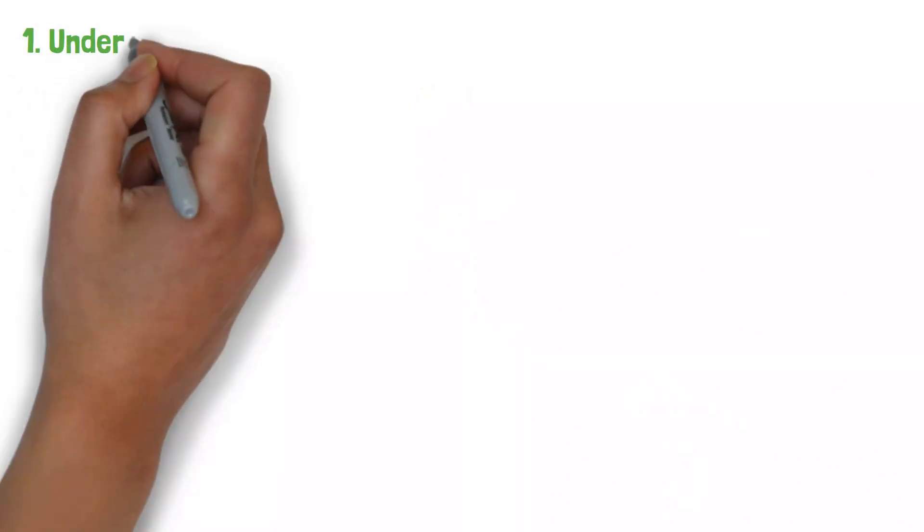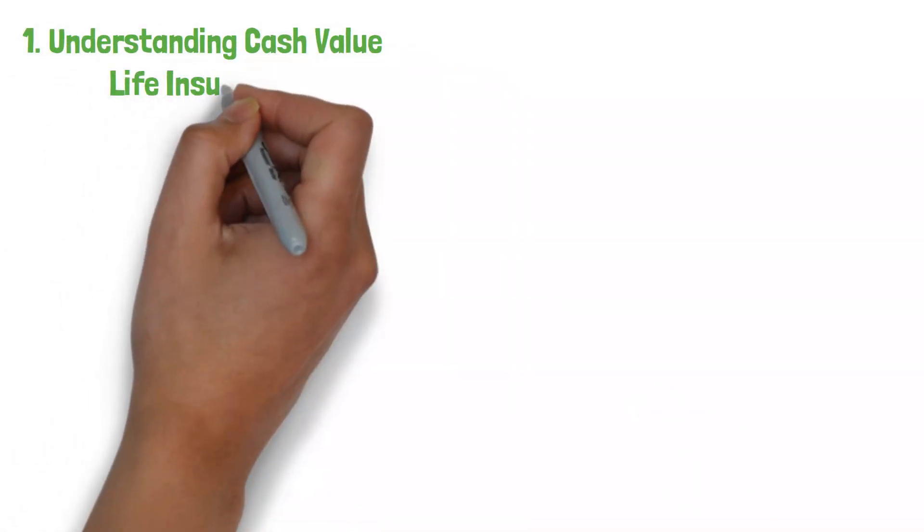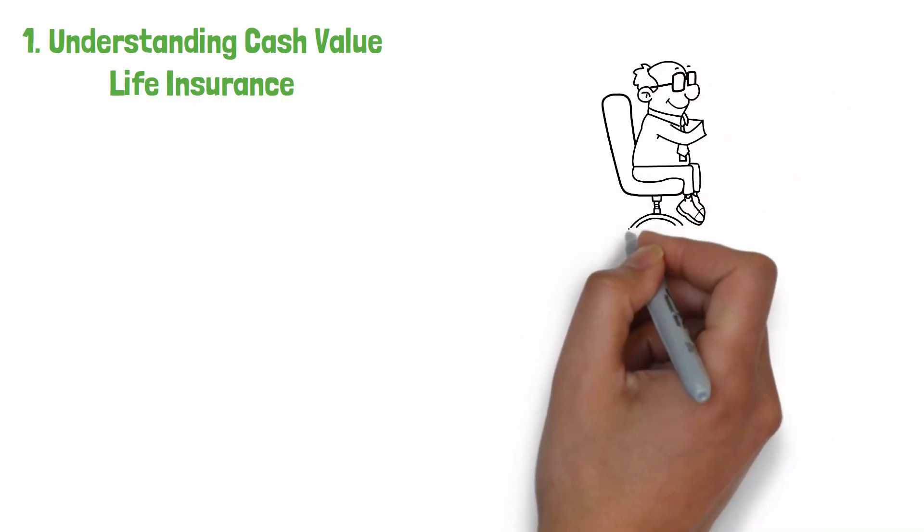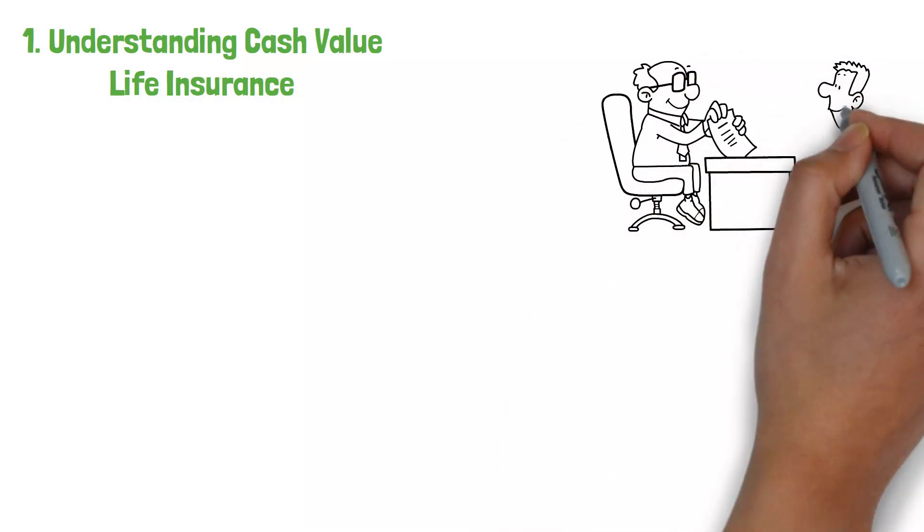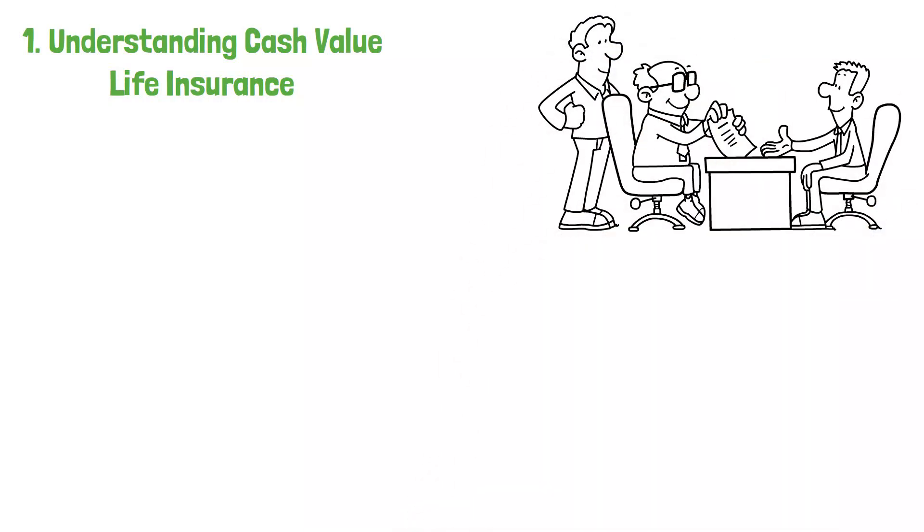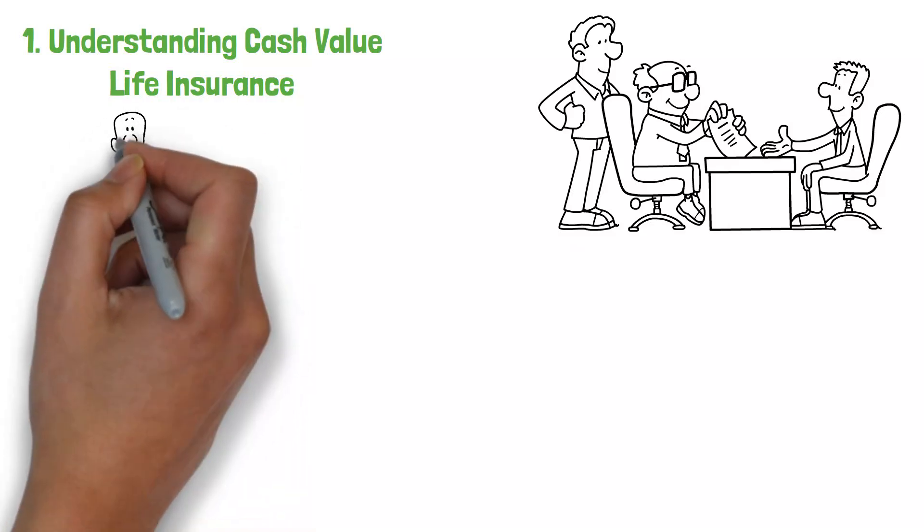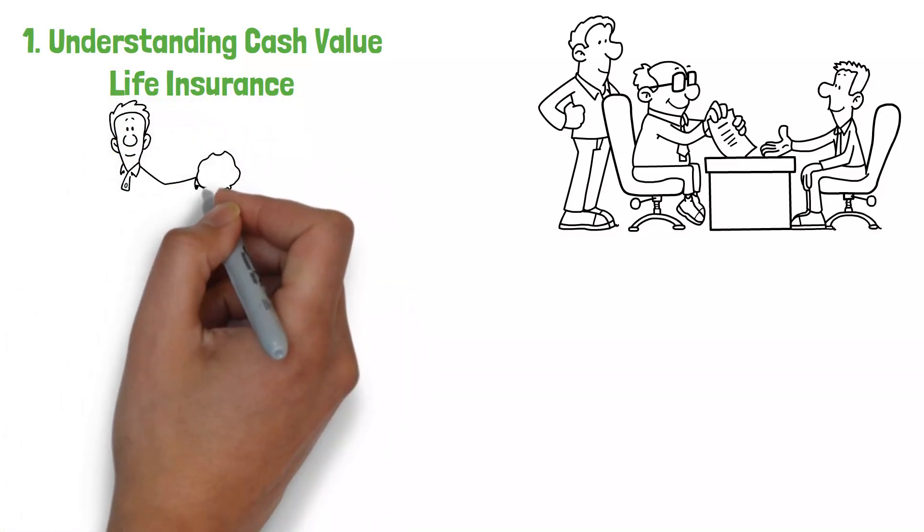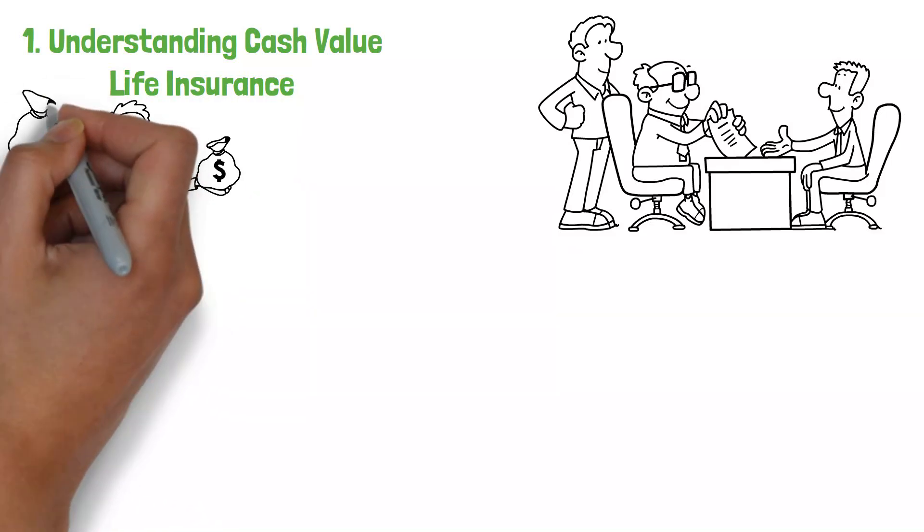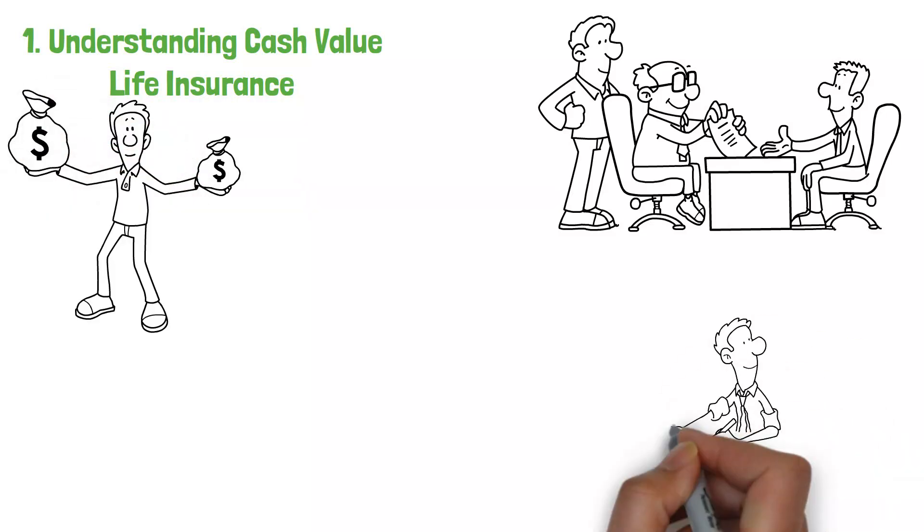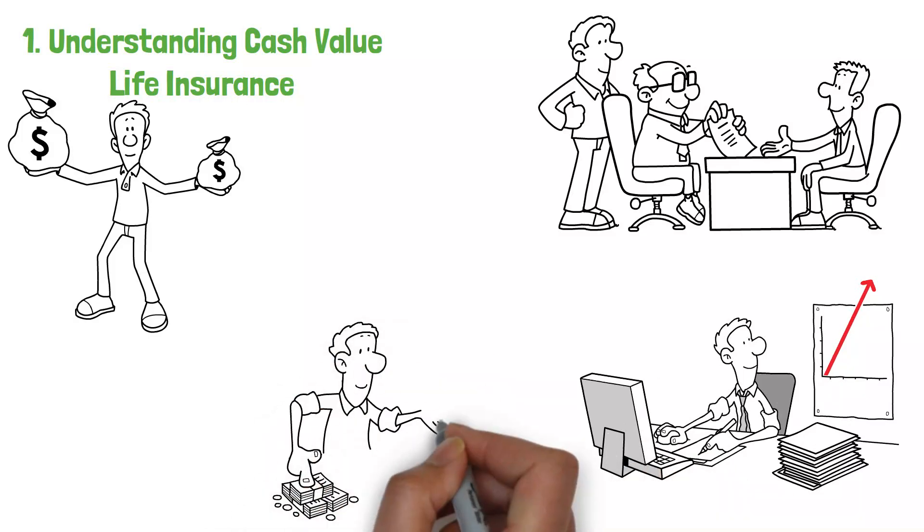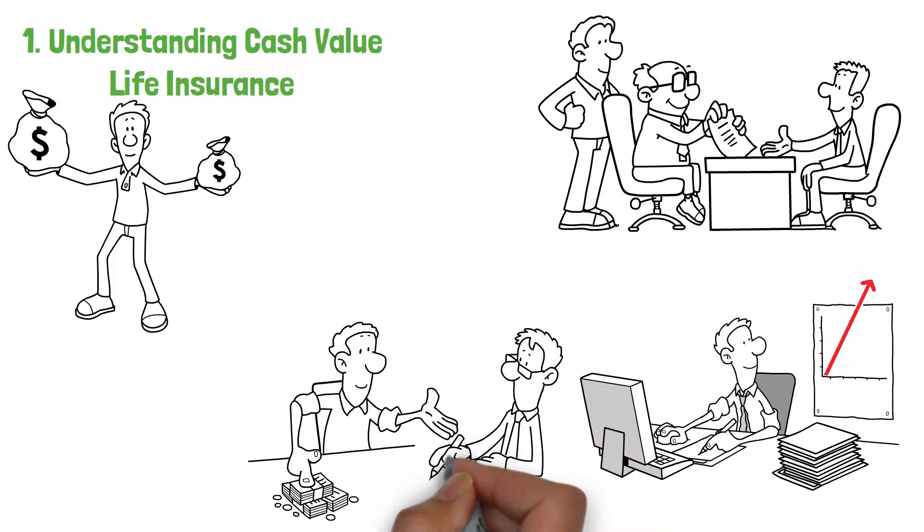Understanding Cash Value Life Insurance. Cash value life insurance, often known as whole life or universal life insurance, provides both a death payment and a savings component. Unlike term life insurance, which only offers coverage for a limited time, cash value plans save a part of your monthly payments in a cash account that increases over time. This monetary worth is accessible via withdrawals or loans, making it a flexible financial asset.